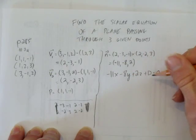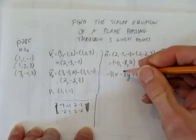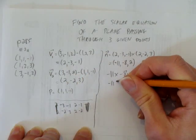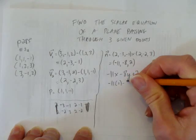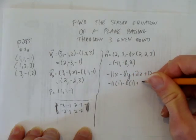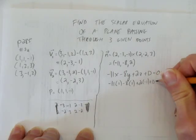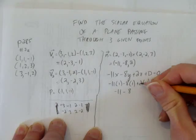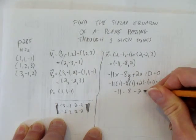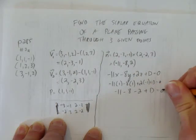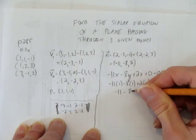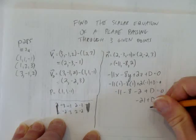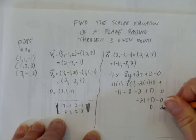But we need to solve for this constant d. We can do that by subbing in a point. Any point, but I pick this one. And we get -11 times 1 minus 8 times 1 plus 2 times -1 plus d. So, what we get is -11 - 8 - 2 + d equals 0. And then -11 - 8 - 2, that's -19. So, -21 + d equals 0. So, d equals -21.